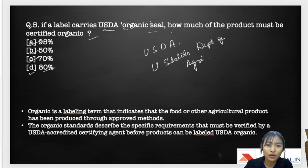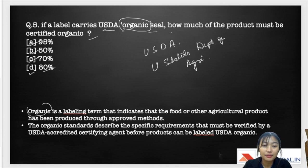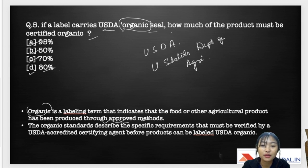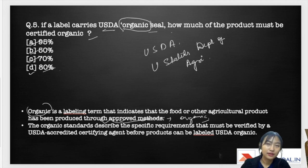Organic is a labeling term indicating that a food or other agricultural product has been produced through approved methods. These approved methods include no use of fertilizers, chemicals, or pesticides, no use of plant hormones, and use only of eco-friendly methods — all approved methods of organic farming.